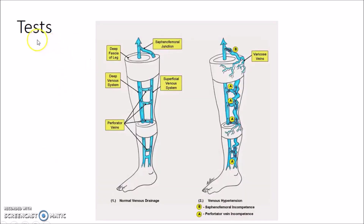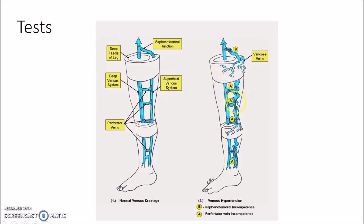There are certain special tests to be done in a case of varicose veins. This picture depicts the principle: you have a superficial venous system, deep venous system, and perforator veins, with the saphenofemoral junction. In varicose veins there will be venous hypertension, which can be due to saphenofemoral incompetence or perforator vein incompetence, and these can be tested by the following tests.